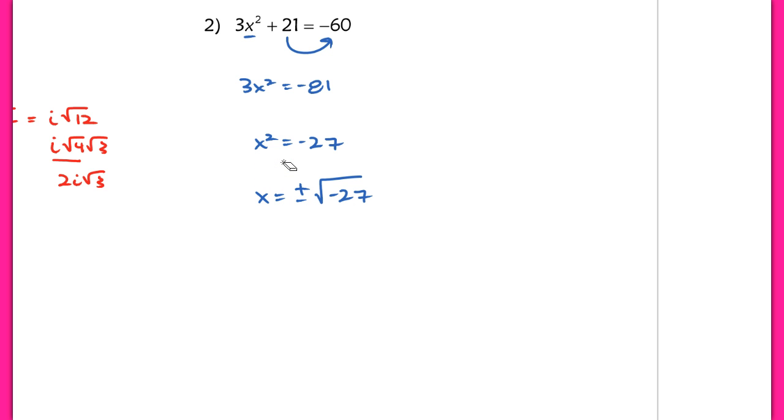Now I'm going to break up that radical. I'm simply going to pull out the i and break down root 27. So the square root of 27 becomes the square root of 9 times the square root of 3. And now I can just simplify here to get x equaling positive or negative 3i times root 3. And there's my final answer for problem number 2.